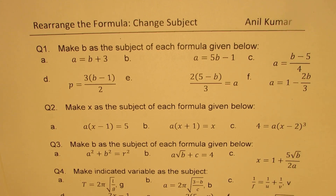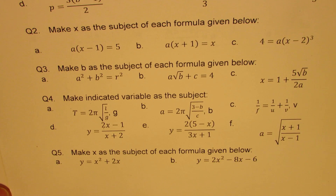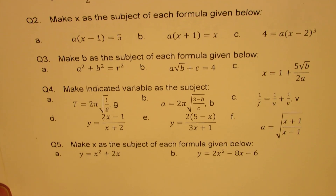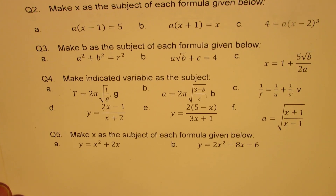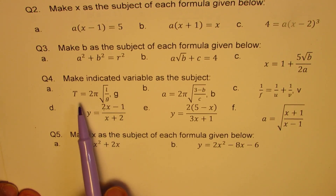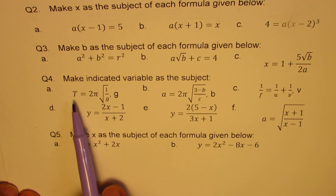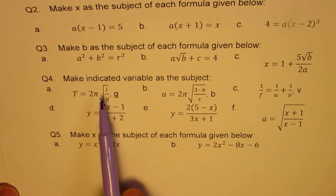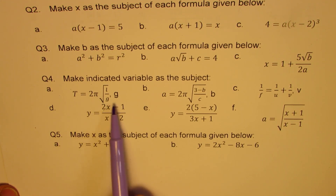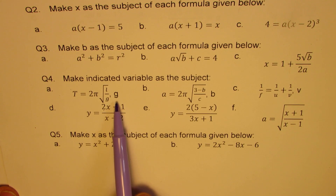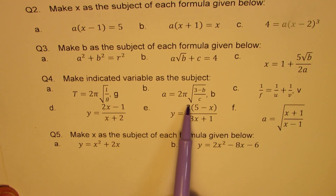Question number four and five are actually thinking questions — we have taken up some popular test questions. For example, T equals to 2 pi square root of L over G, where you may have to isolate G.